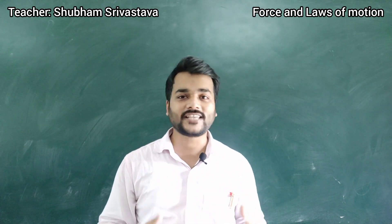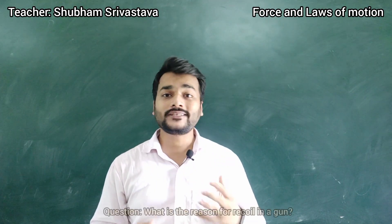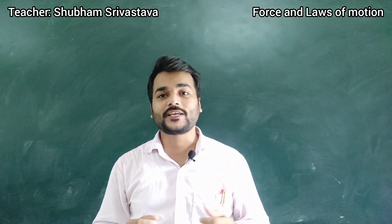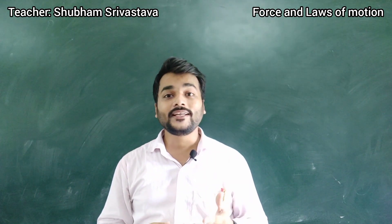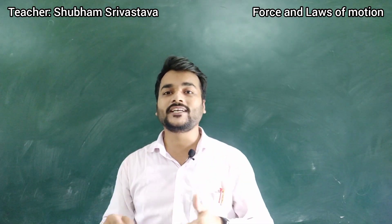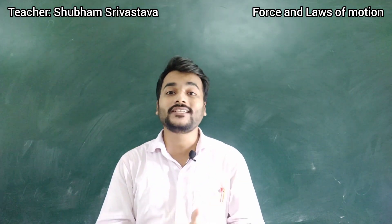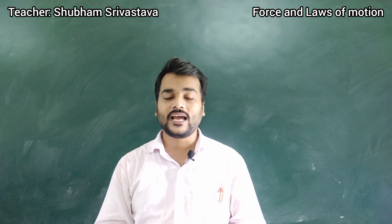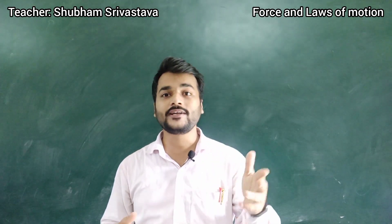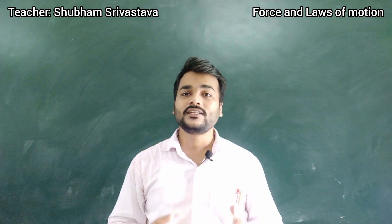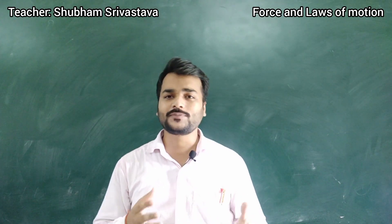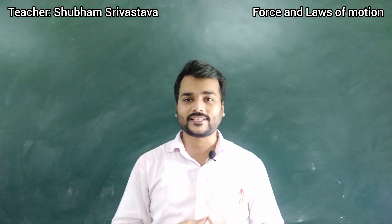The next question is: what is the reason for recoil in a gun? It is because of Newton's third law of motion. When the gun applies an action force to the bullet, the bullet applies an equal and opposite reaction force back to the gun. That is why the person holding the gun feels a jerk, and may miss the target due to the motion of the gun.